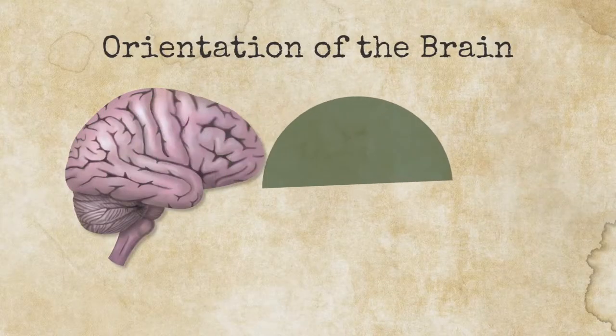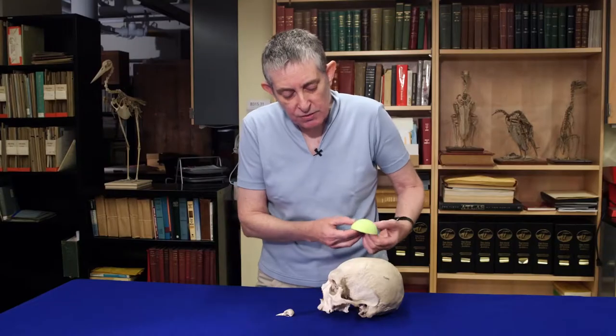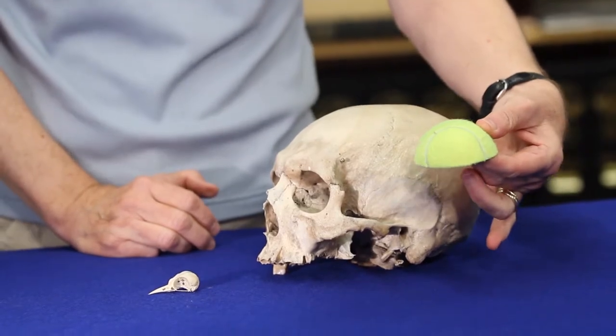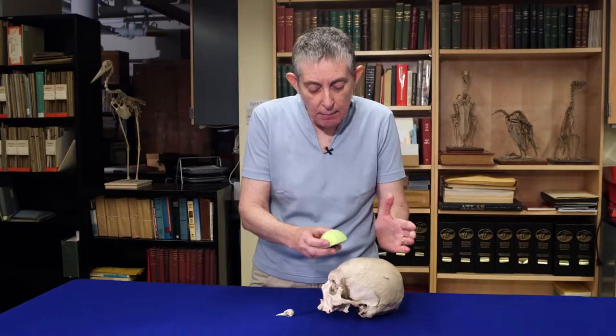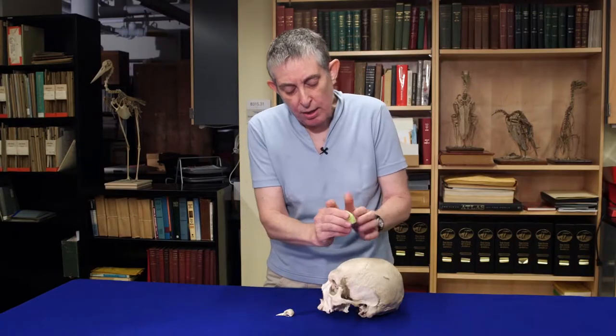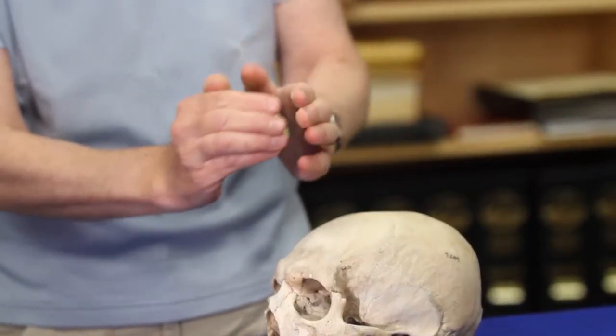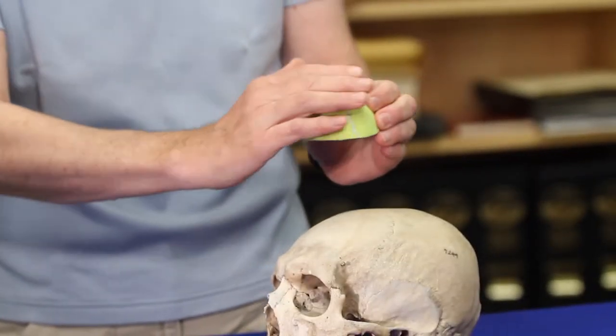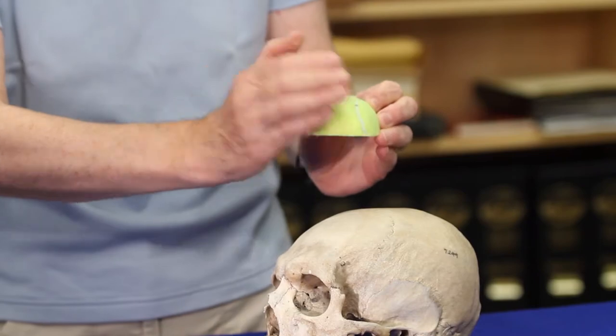The brain's roughly a hemisphere. And in the human brain, the hemisphere is oriented something like this. And so when the impact occurs in the human brain, the human brain hits the front and hits the back of the skull. And the area of contact is roughly this half area here.